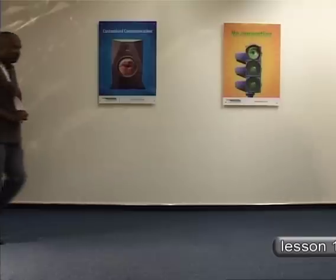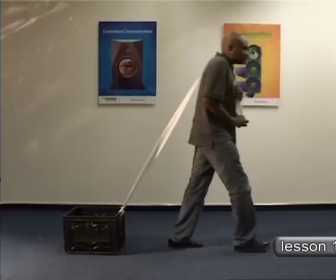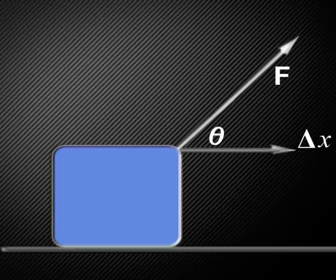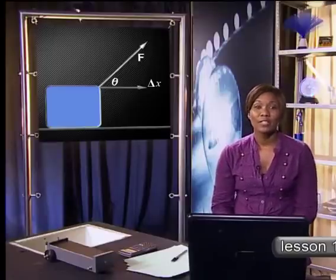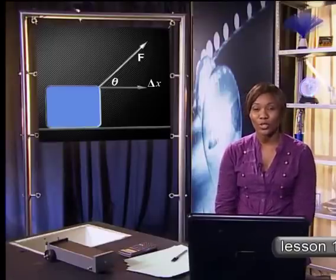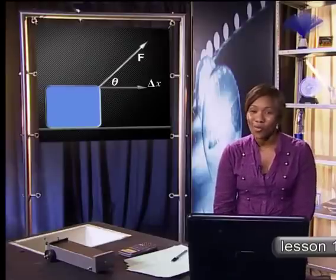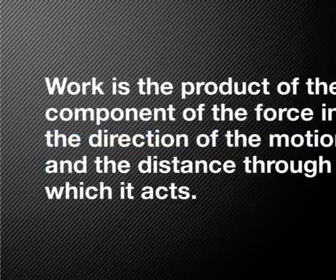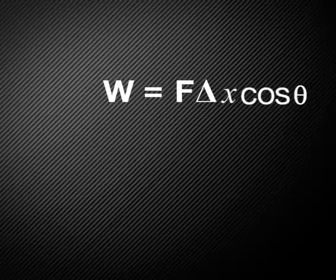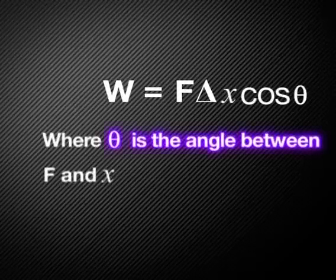What happens if the force applied to an object does not have the same line of action as the resulting displacement of the object? Here is an example: a man is pulling a heavy box from an angle above the box, making the box move horizontally. Work is done, but the direction of the force is not the same as the direction of the displacement. In this case, we must first calculate the component of the force which acted in the direction of the movement. We define work as the product of the component of the force in the direction of motion and the distance through which it acts. So, work equals force times displacement times cosine theta, where theta is the angle between F and x.